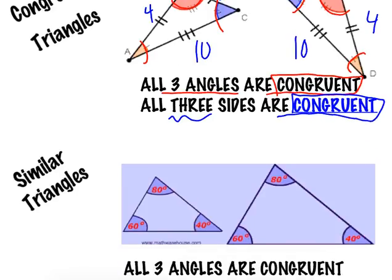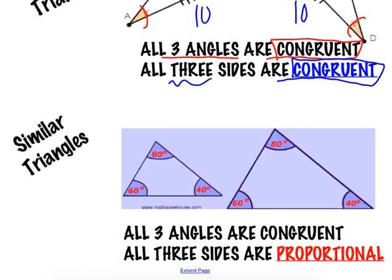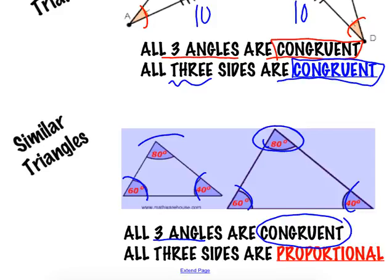Now, similar triangles, on the other hand, have three angles that are congruent. Again, we can see from our picture here. I have 60s, 40s, and 80s. So my three angles are the exact same. But the difference, guys, is that your sides are proportional. So you should always have one that is small and a big one. You should have a smaller triangle and a bigger triangle. They're similar, but one's a shrunken version of the other one, or one's a larger version of the other one.